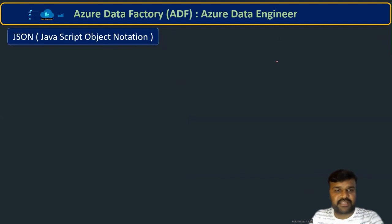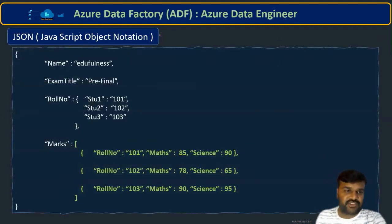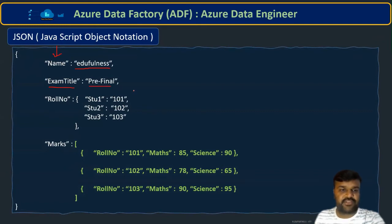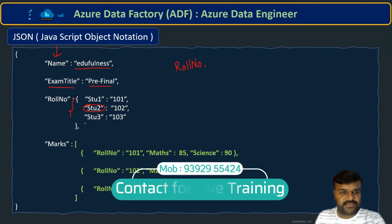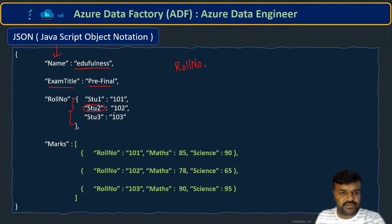Let us take a practical example. Here is a JSON structure with fields: name, exam title, role number, and marks — all at the same level. If I want to know the name, it is straightforward. For example, to get Student 2's role number, I use role number with dot notation, go to the object, and access the field named student2 — this gives me the corresponding value.